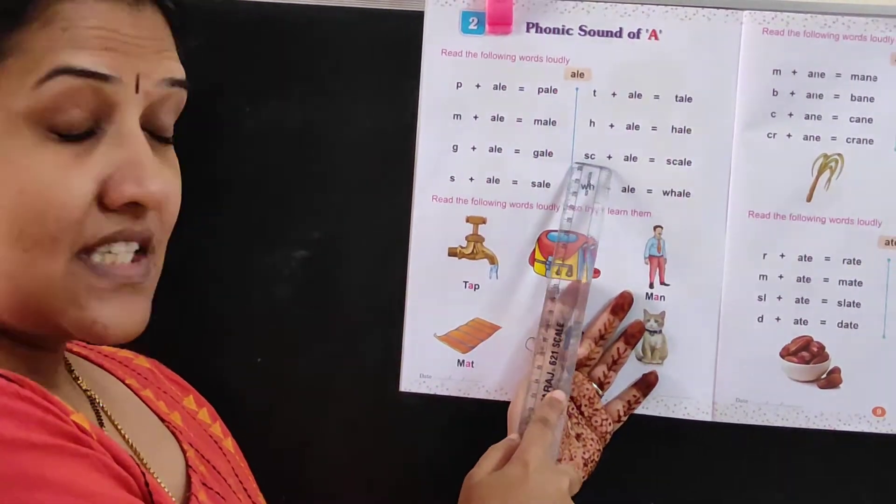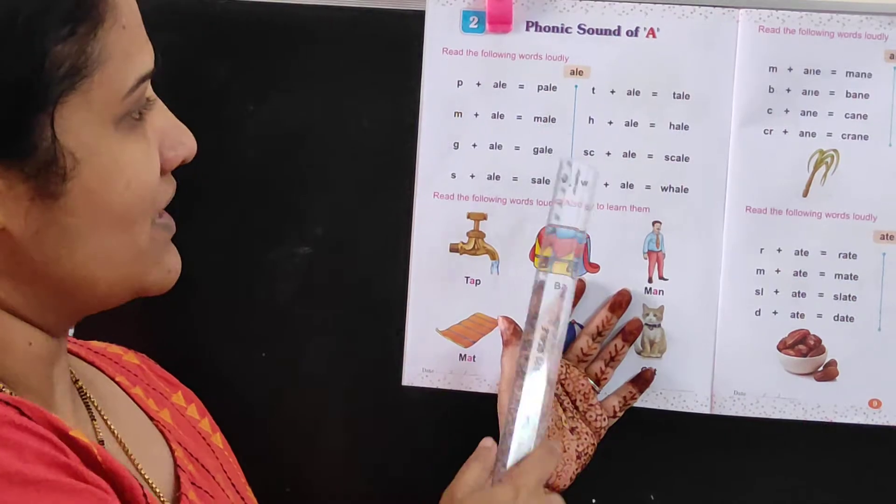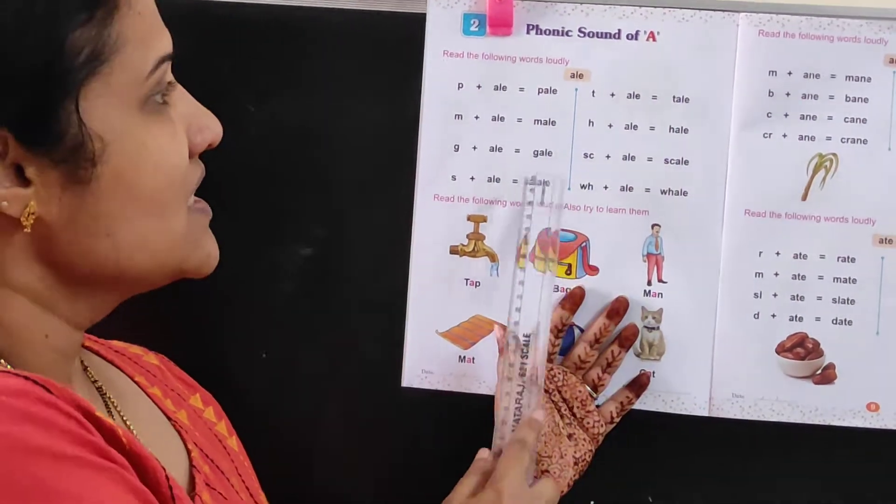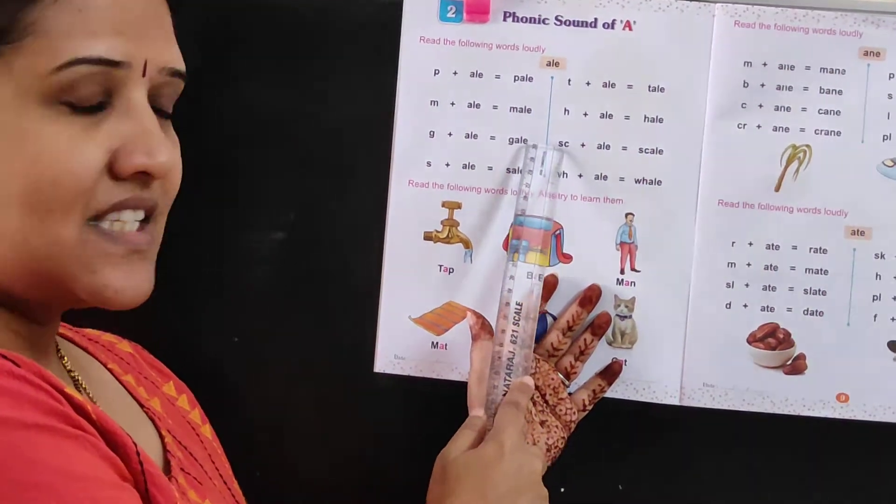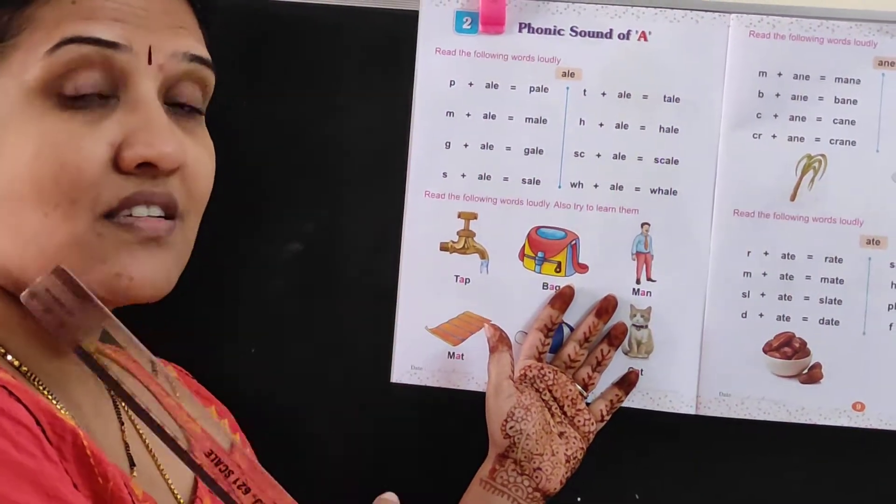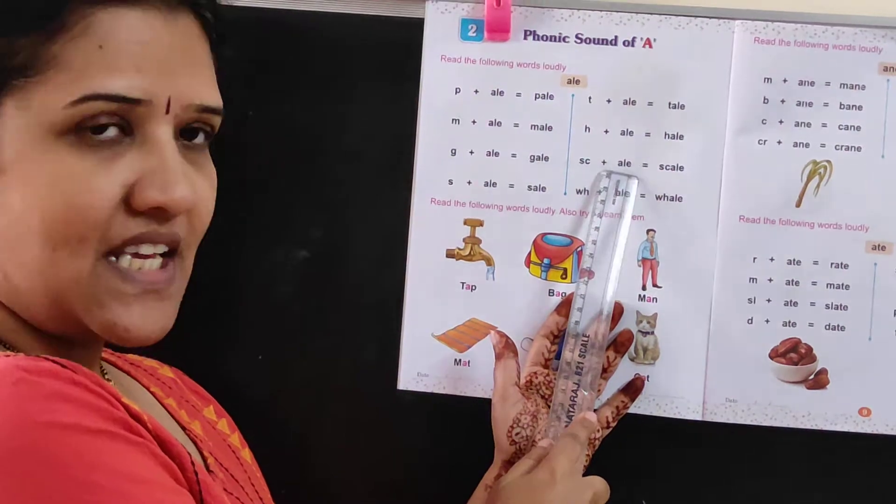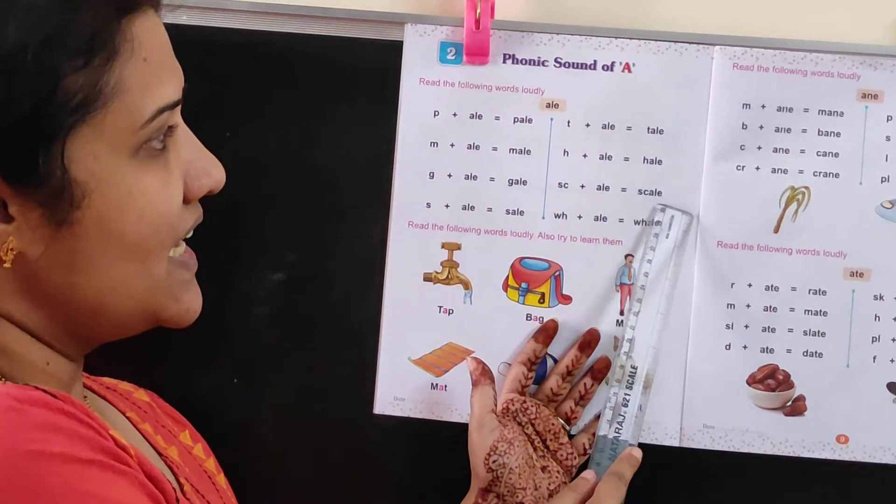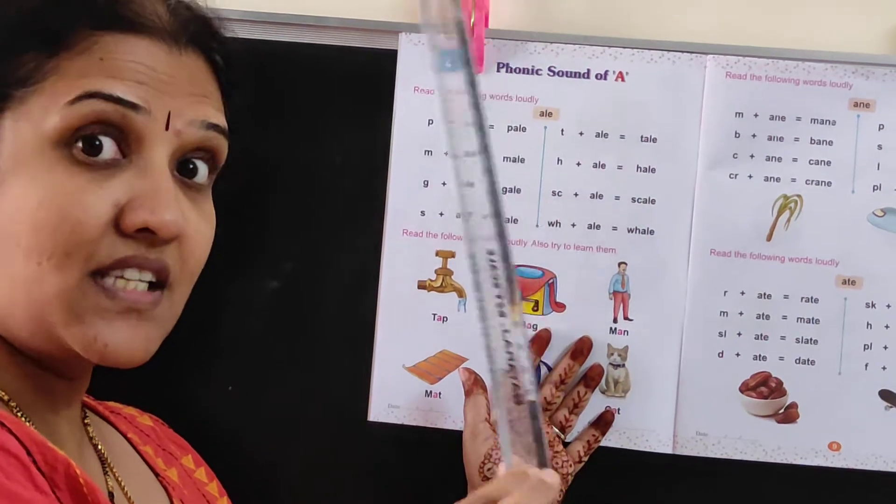Now SC, two letters come. S-C-A-L-E, scale. When it comes S and C, the sound is scar. Scar plus A is scale. This is a scale.